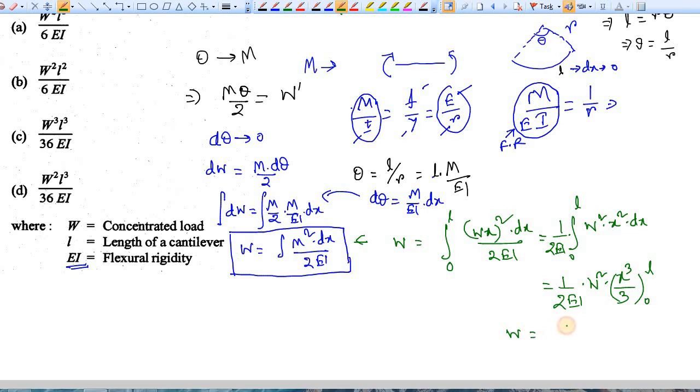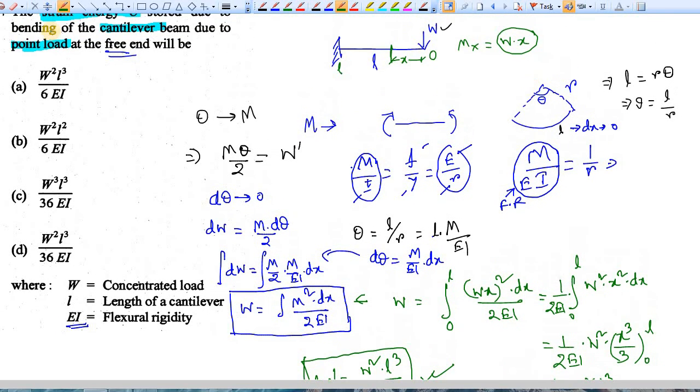So your work done for this system is coming as 1 by 2EI, W squared l cubed by 3, or work done W' is load squared times l cubed divided by 6EI. So you have got the concept and the answer. The right answer is W squared l cubed by 6EI.